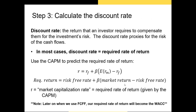In step three we calculate the discount rate to be used in our model. The discount rate is the return that an investor requires to compensate them for the investment's risk — the riskier the cash flows, the higher the discount rate. In valuation work, depending on what is in our numerator, we could use either the required rate of return calculated using the CAPM or the weighted average cost of capital.